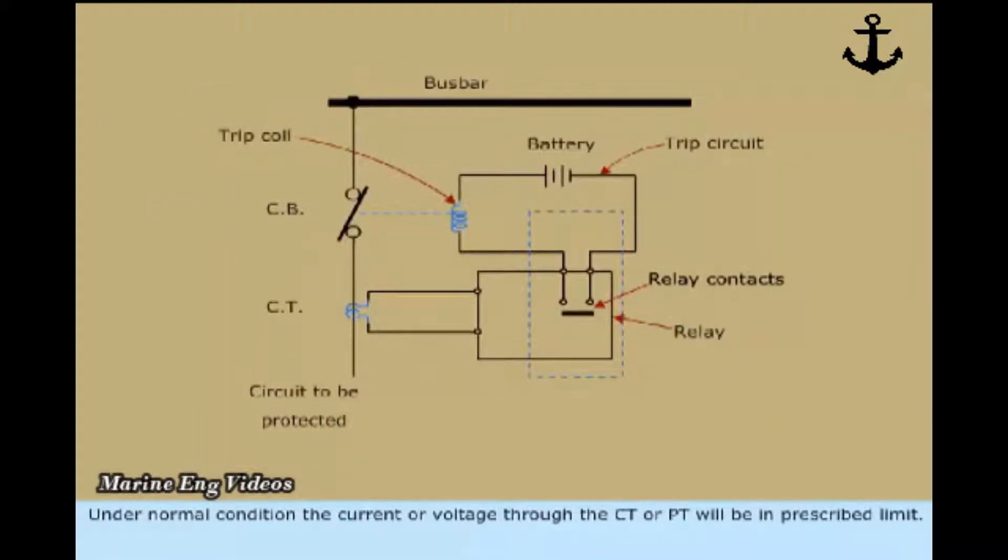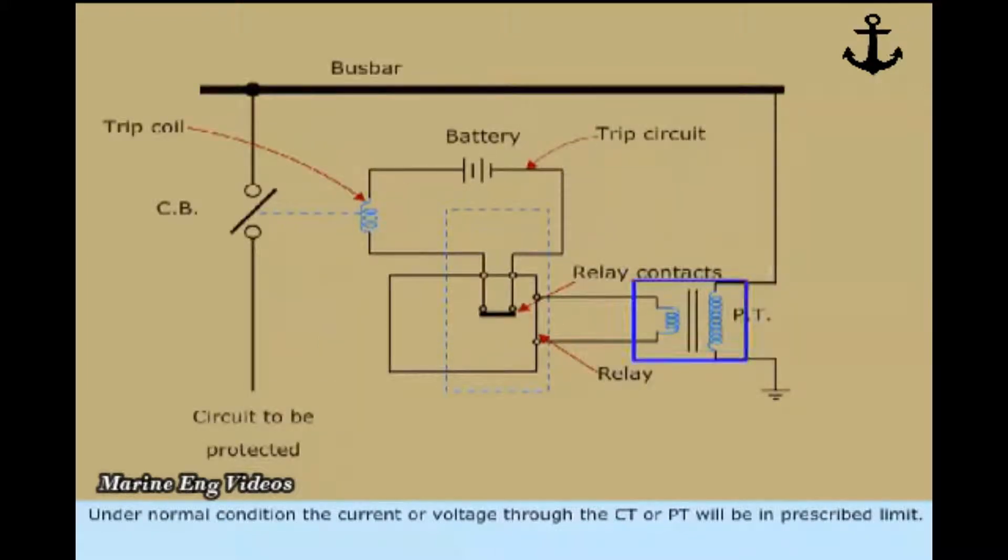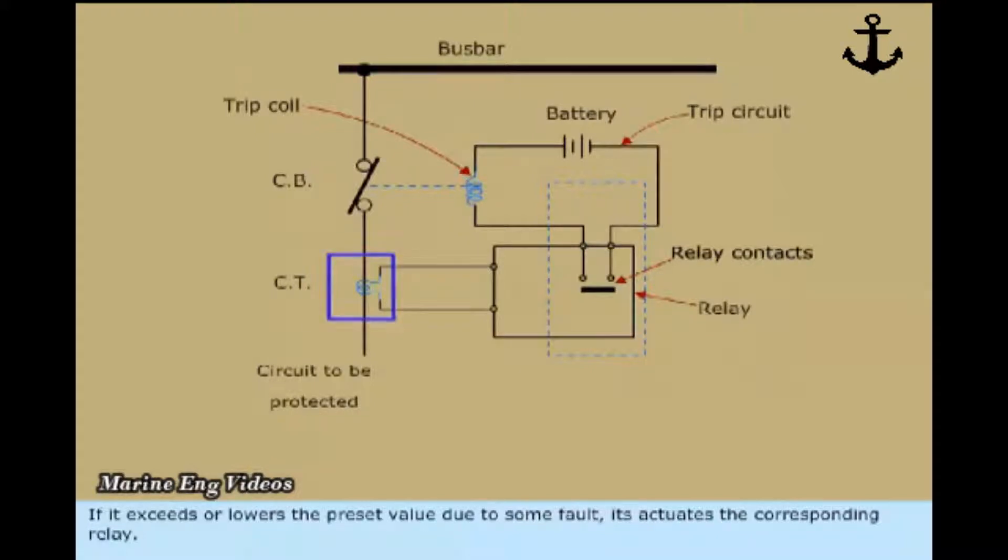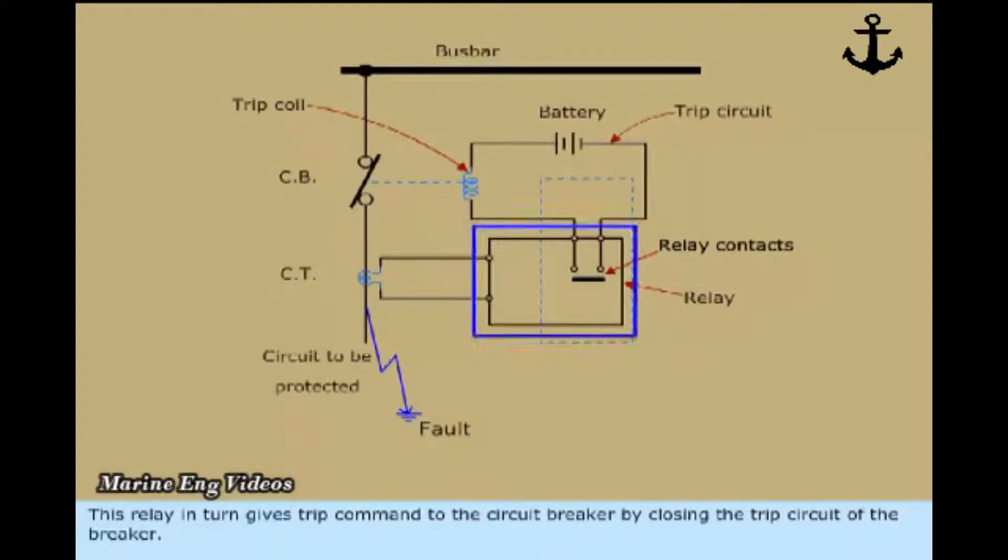Under normal condition, the current or voltage to the CT or PT will be in prescribed limit. If it exceeds or lowers the preset value due to some fault, it actuates the corresponding relay. This relay in turn gives trip command to the circuit breaker by closing the trip circuit of the breaker.